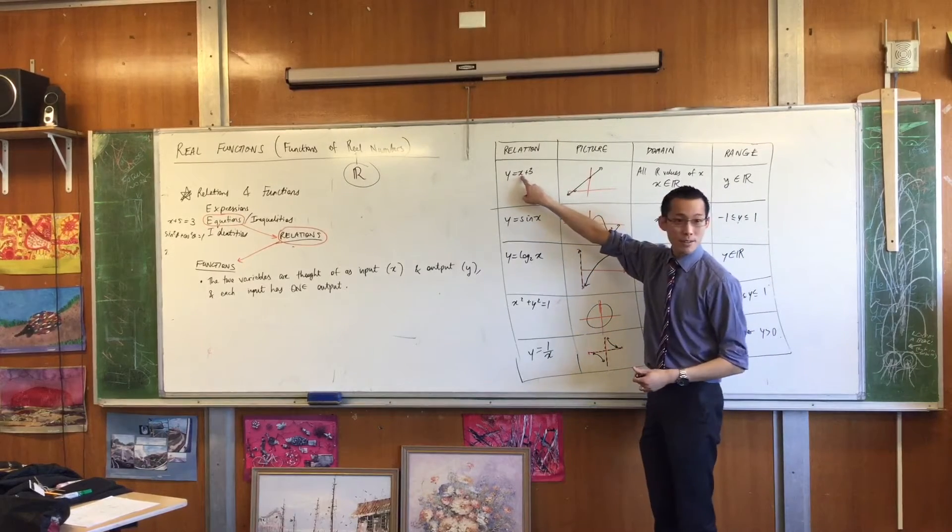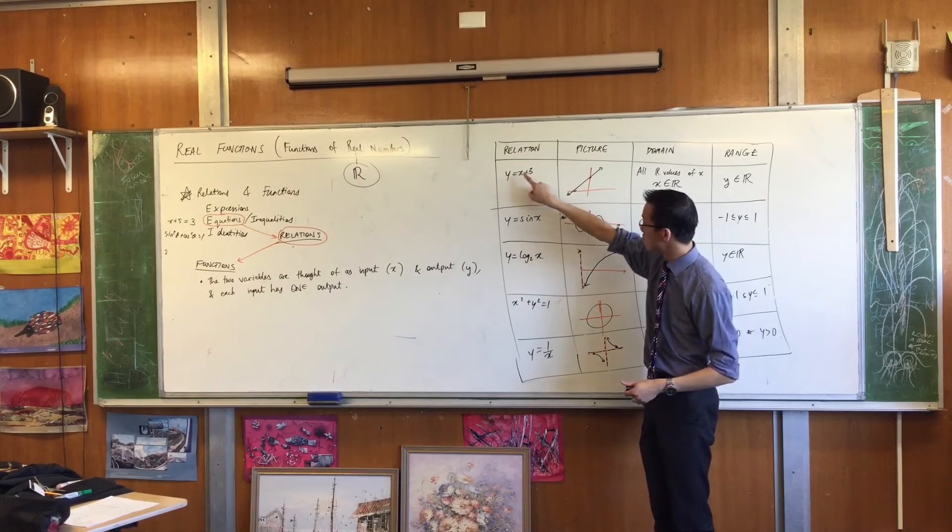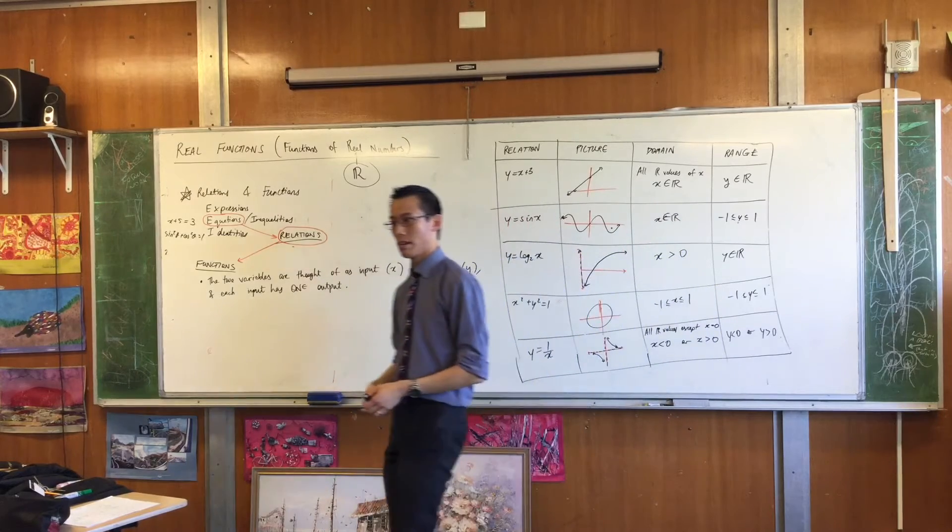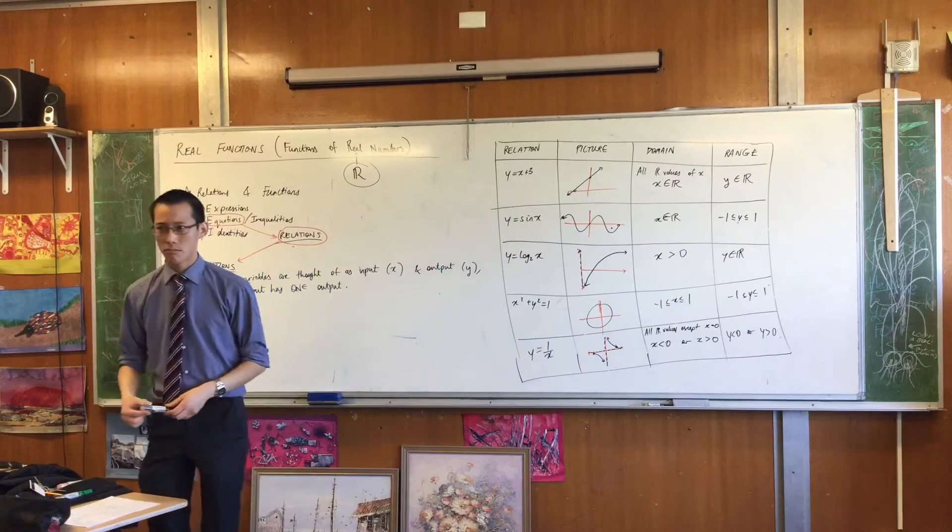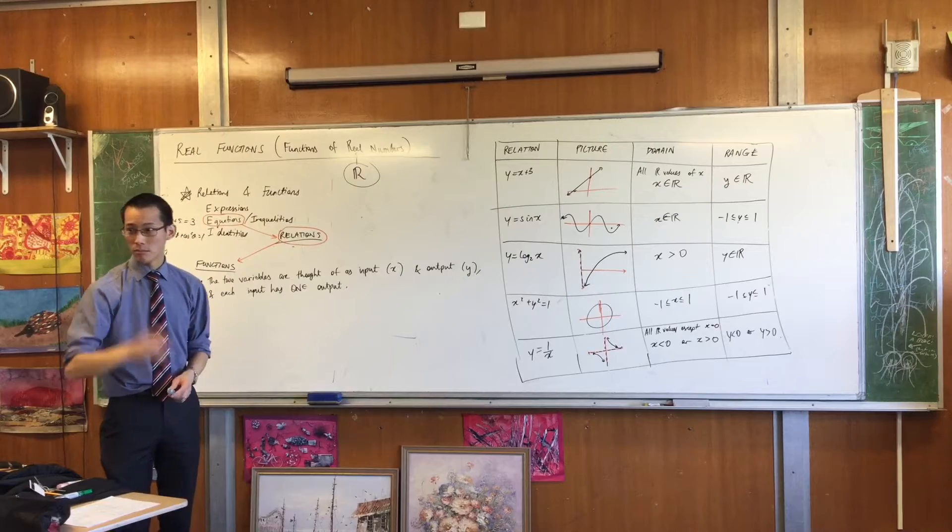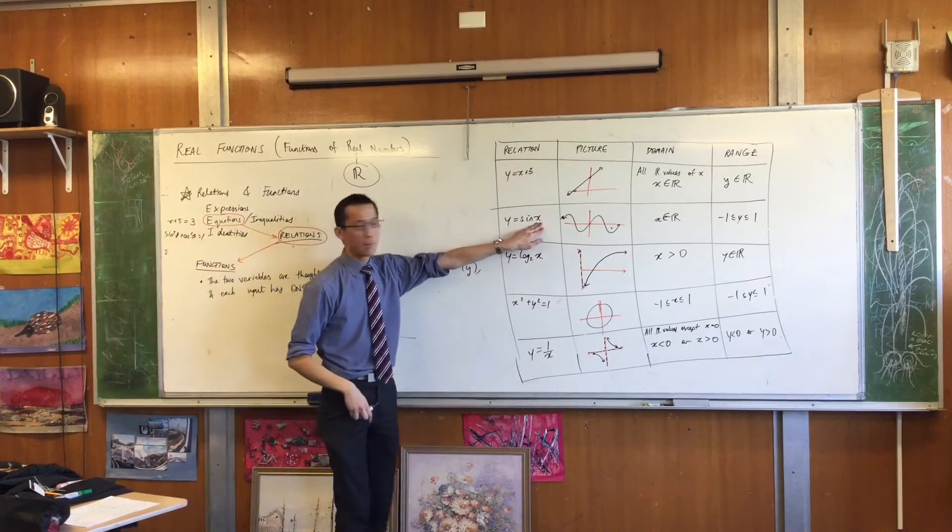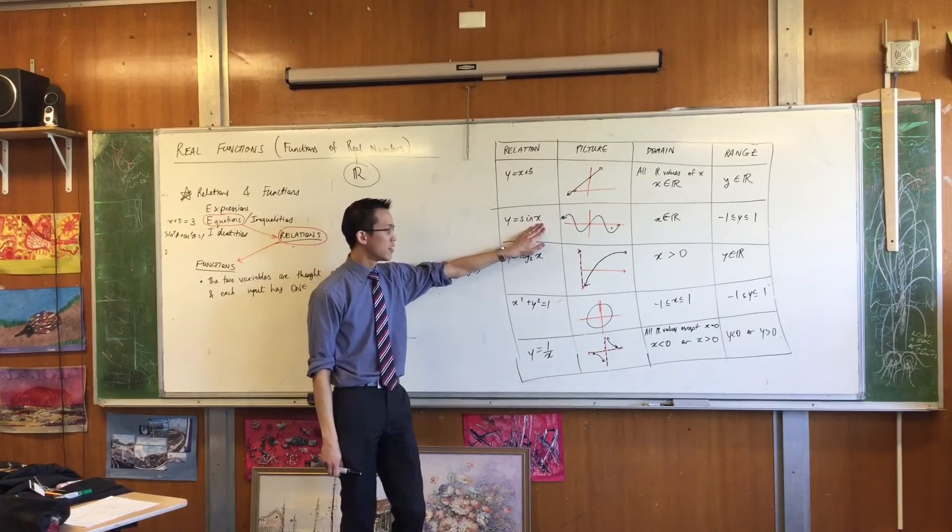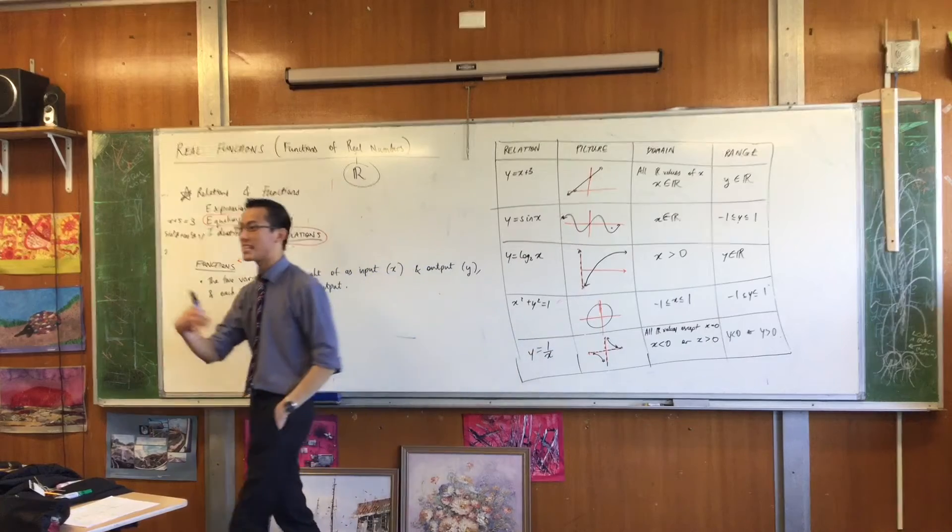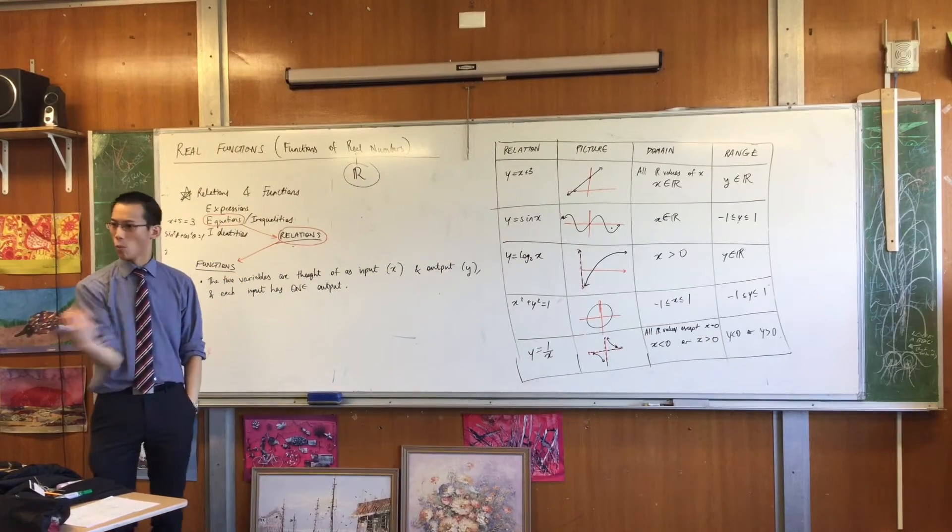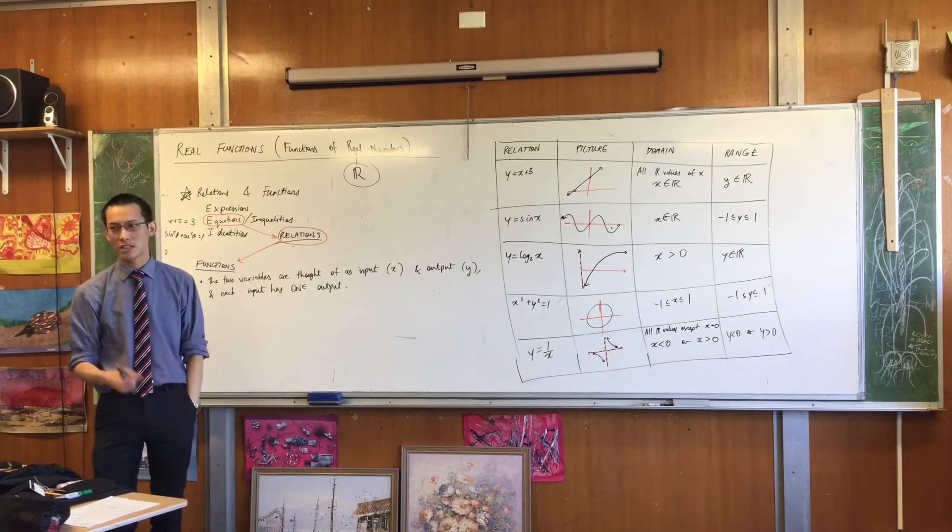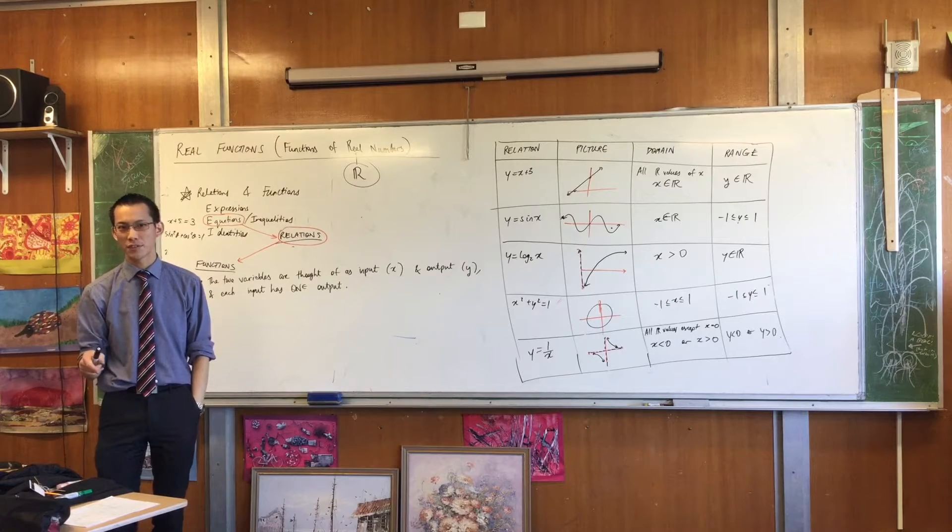If this is the input, this is the output. You put in an x, how many values of y do you get out? Exactly one. In just the same way, if you put in a value of x here, you put in an angle, you'll get out exactly one y value. Sine of 30 degrees is only a half. It's not like a couple of different things.